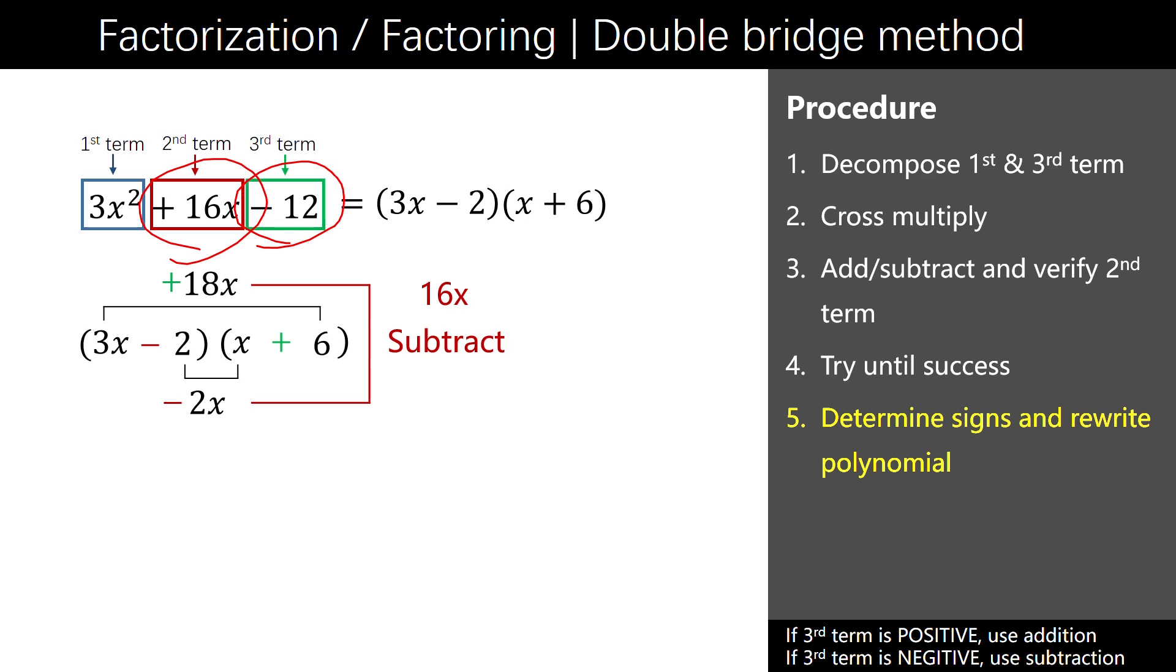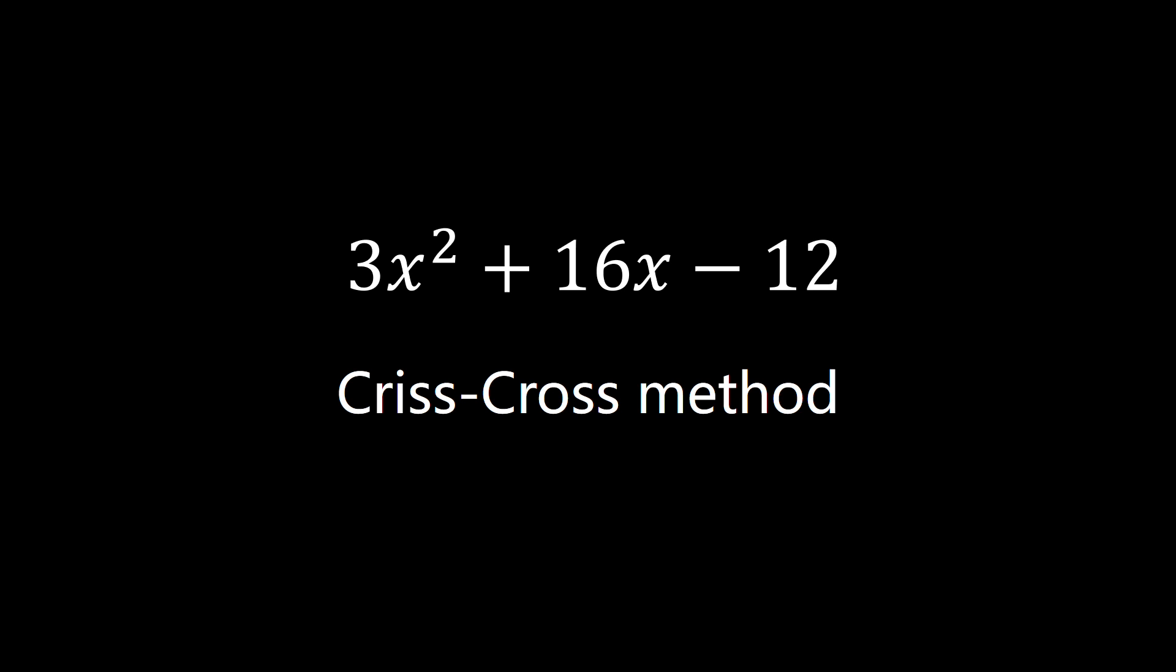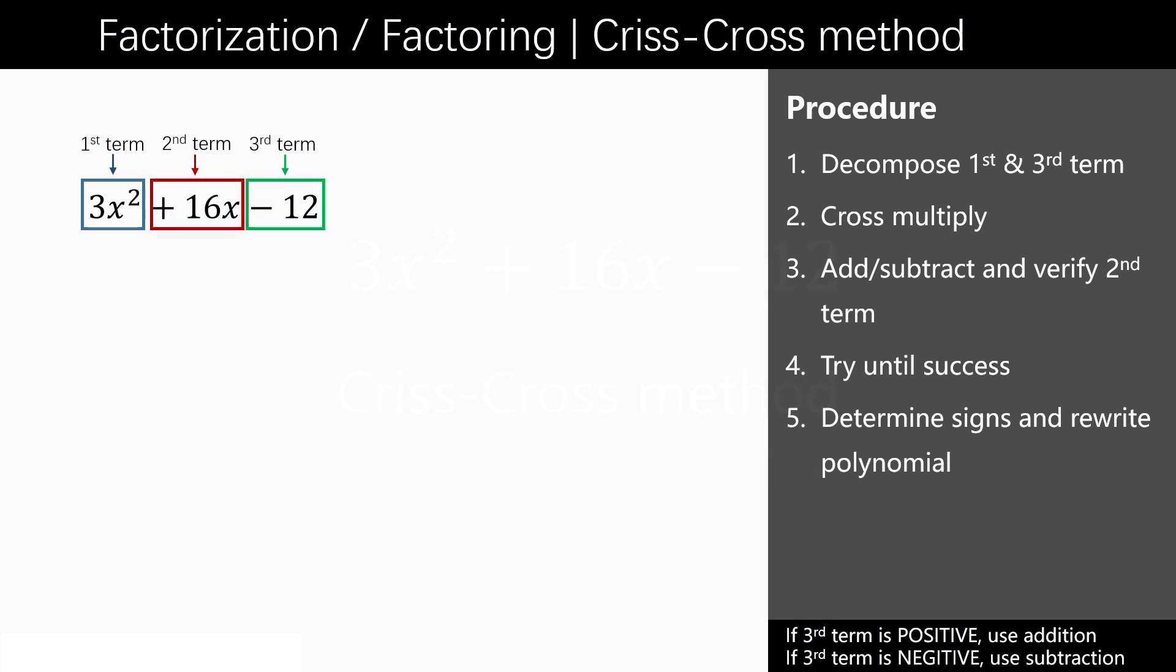Factors of the polynomial are 3x minus 2 and x plus 6. The alternative method to factorize the polynomial is called the criss-cross method. It is similar to the previous one, but it breaks down the numbers vertically instead of horizontally. We still follow the same procedure. 3x squared equals 3x times x. 12 equals 1 times 12.